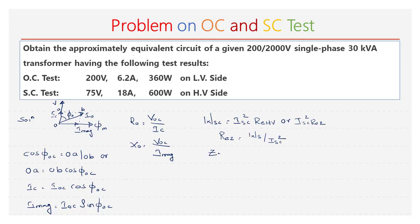The total equivalent impedance referred to the secondary, ZE2, is equal to the voltage during the SC test divided by the current during the SC test. Next, we can find the equivalent reactance referred to the secondary as XE2 is equal to the square root of ZE2 squared minus RE2 squared.